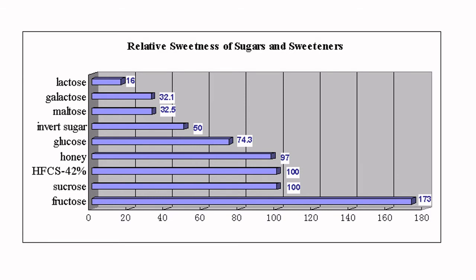Thinking about colligative properties, invert sugar gives you two particles gram for gram — a dissociation factor of two — so more colligative properties with less sweetness. You could increase the amount twofold to get the same sweetness as sucrose and have four times the particles, delivering much more colligative effect. That's why ice cream manufacturers have long used invert sugar: it's not that expensive, it has great colligative properties, and you get good freezing point depression without being overpoweringly sweet.